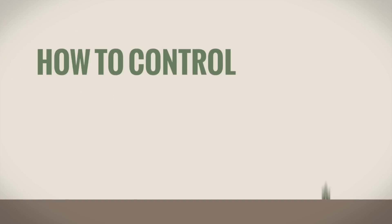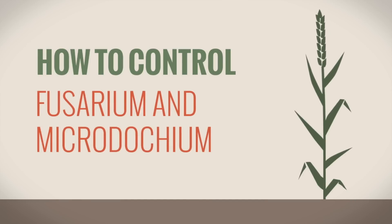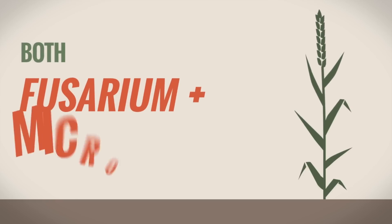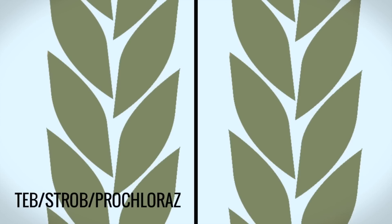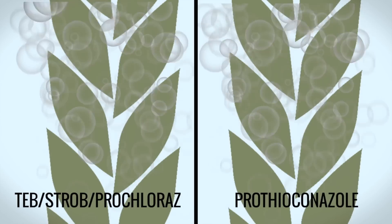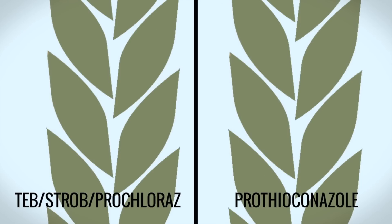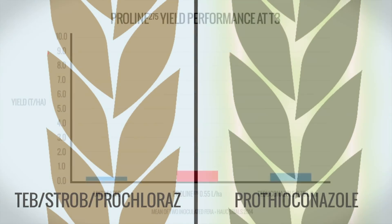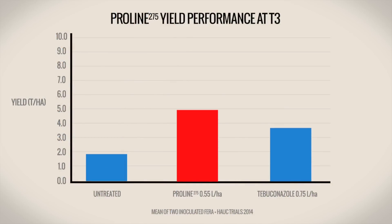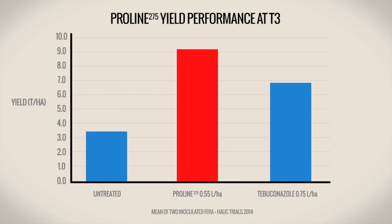How to control Fusarium and Microdocium. Prothioconazole has been shown to be the only effective treatment for Fusarium and Microdocium in winter wheat. Alternative chemistry such as Tebuconazole will not provide protection against Microdocium, while resistance to strobilurins means they too are no longer an effective treatment for the disease. A 0.55 litres per hectare dose of Proline 275 at T3 delivers over 2.5 tonnes per hectare more yield than alternative chemistry.